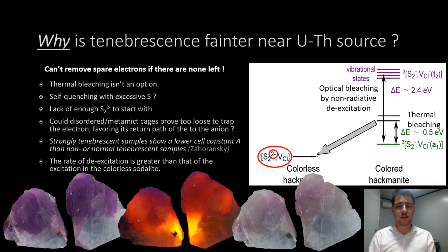Why is tenebrescence fainter near the uranium-thorium source? If the electron is gone, you can't remove another spare electron if there are none left. You can also infer that more disordered or metamict cages are too loose to hold the electron and trap it long term, favoring its return path to the anion. Thermal bleaching is not an option either because that other slice of the slab is actually still white, even though there is no thermal difference.